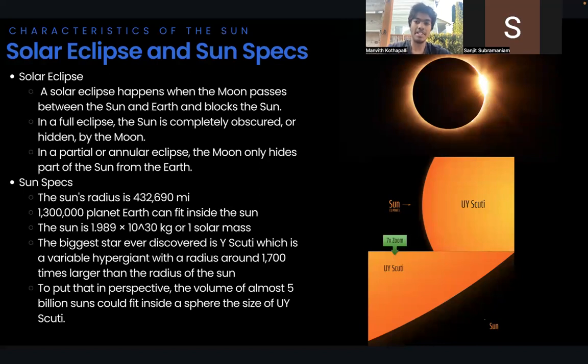Now, let's talk about the specifications of the sun. The sun's radius is 432,690 miles, and that means that 1,300,000 planet earths can fit inside the sun. That's a lot of earths.